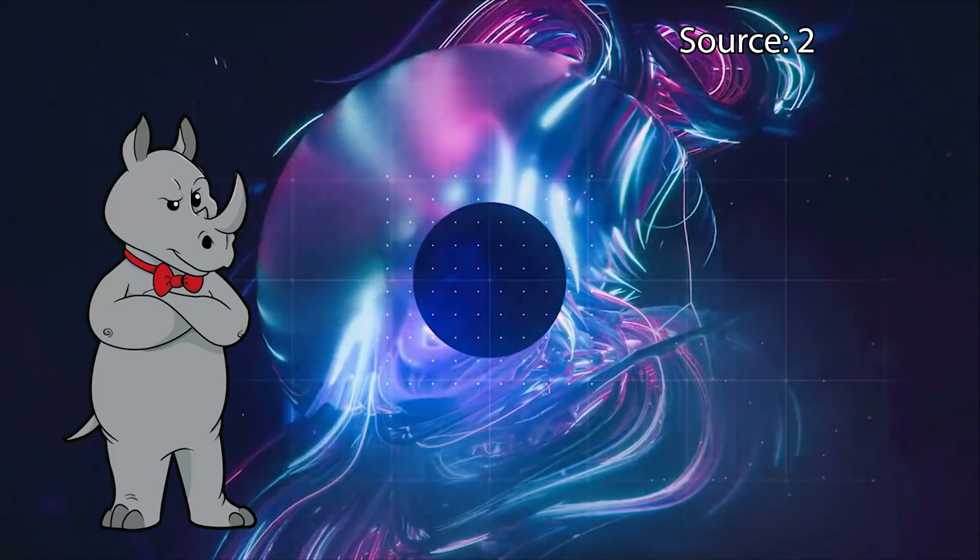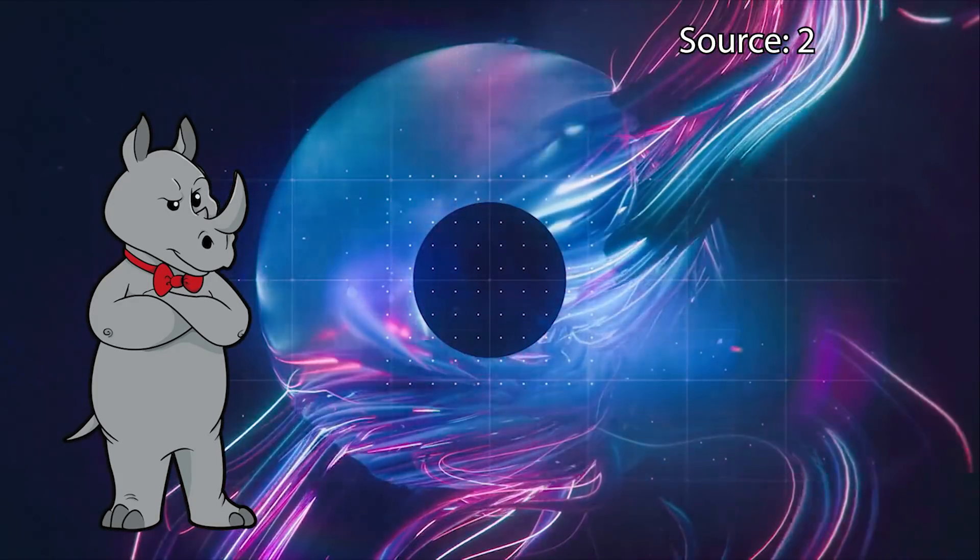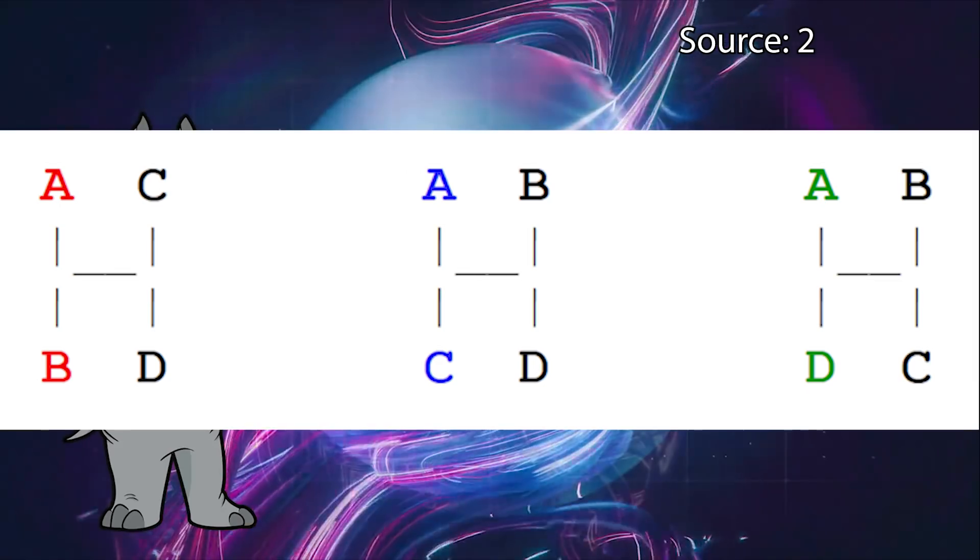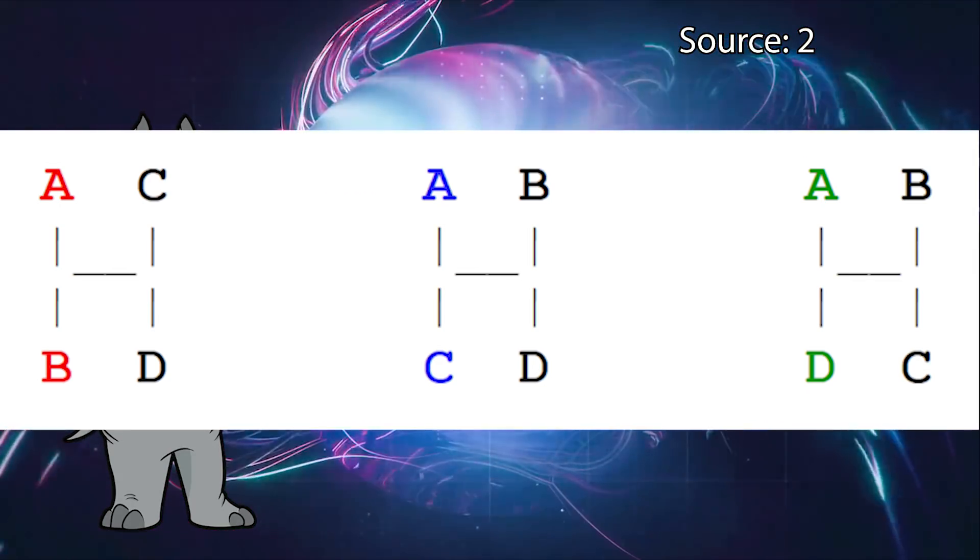So if you have four taxa, A, B, C, and D, then with respect to taxon A, there are three potential phylogenies. That is, it could be most closely related to B, most closely related to C, or most closely related to D.